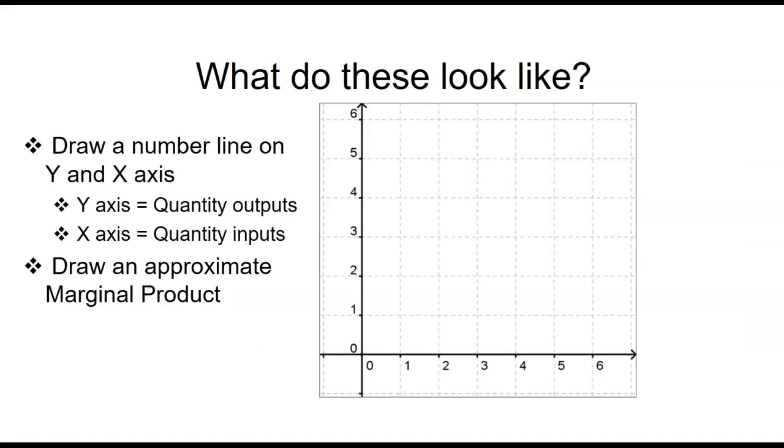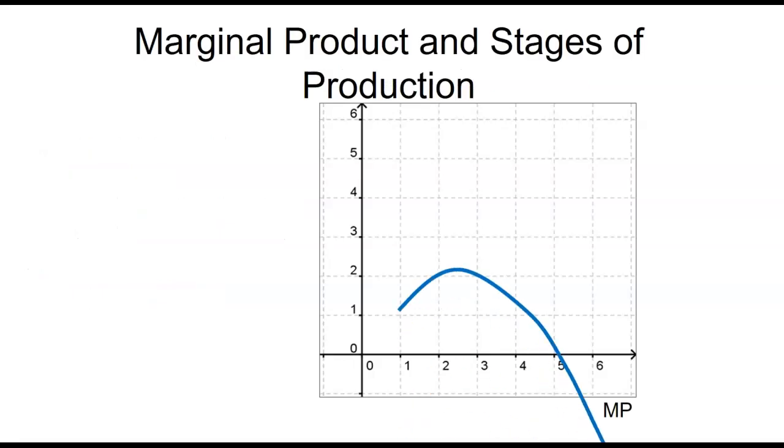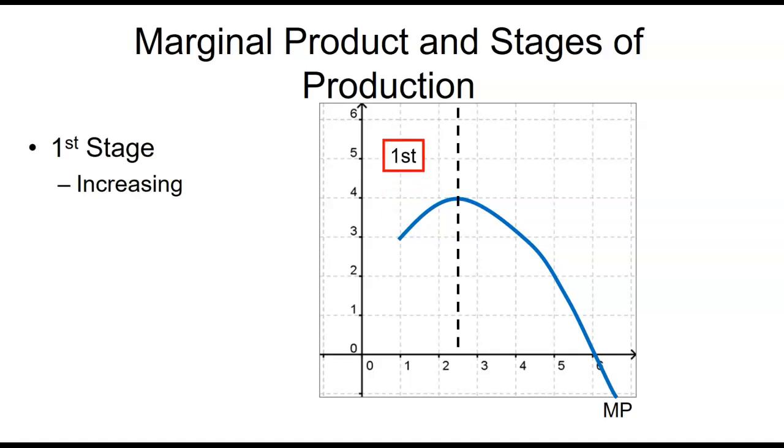Okay, I want you to practice something. Try drawing a marginal product curve. The y-axis would be quantity of outputs. The x-axis would be quantity of inputs. Pause for a second and then we're going to keep going. So hopefully yours looks about like this. It's an upside down check mark.